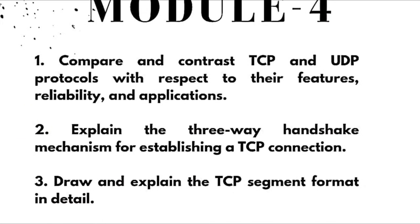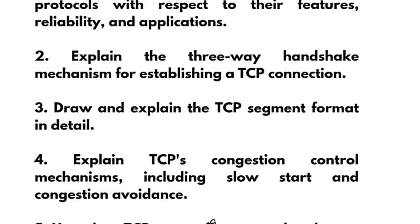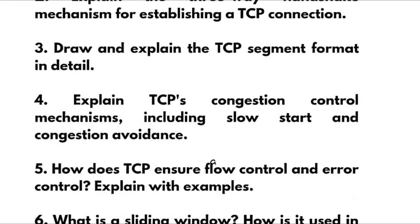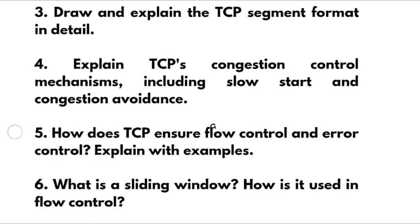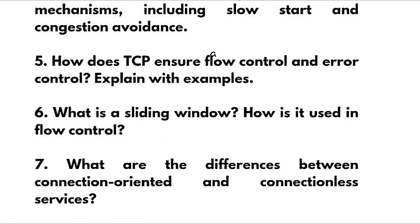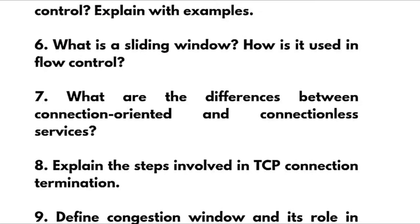Module 4 super important questions: compare and contrast TCP and UDP protocols with respect to their features, reliability, and applications — sometimes they may also ask advantages and disadvantages of both TCP and UDP; explain the three-way handshake mechanism for establishing a TCP connection; draw and explain the TCP segment format in detail; explain TCP's congestion control mechanisms including slow start and congestion avoidance; how does TCP ensure flow control and error control — explain with examples.